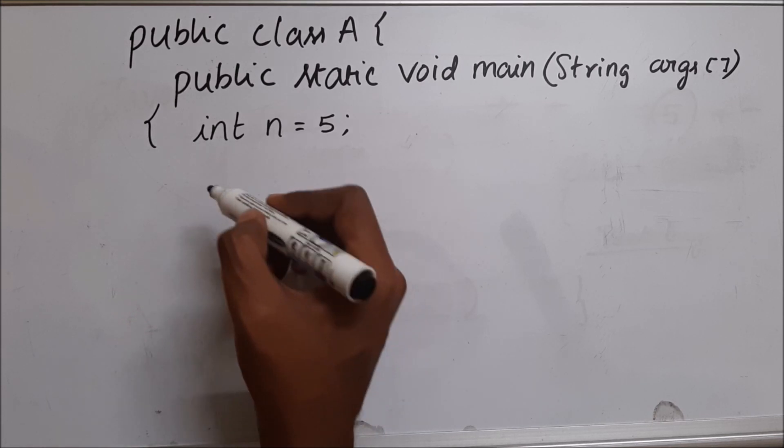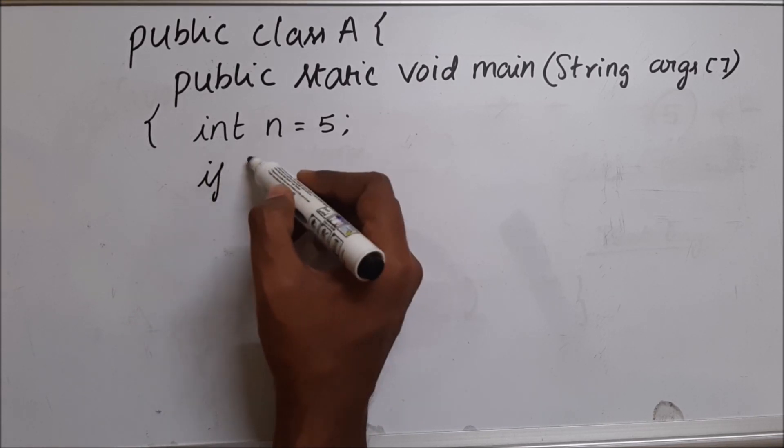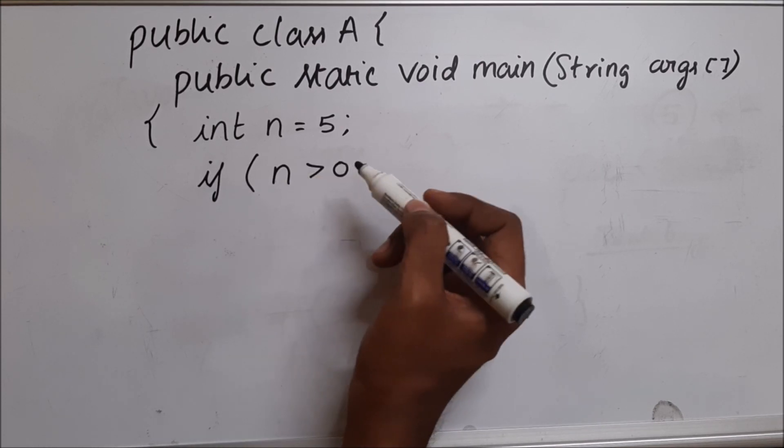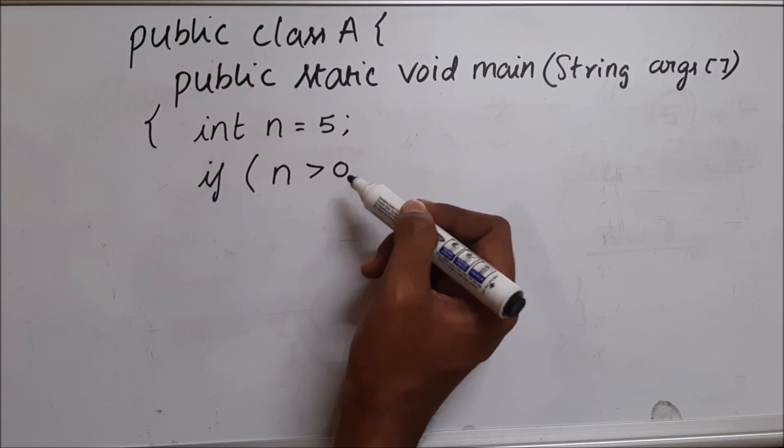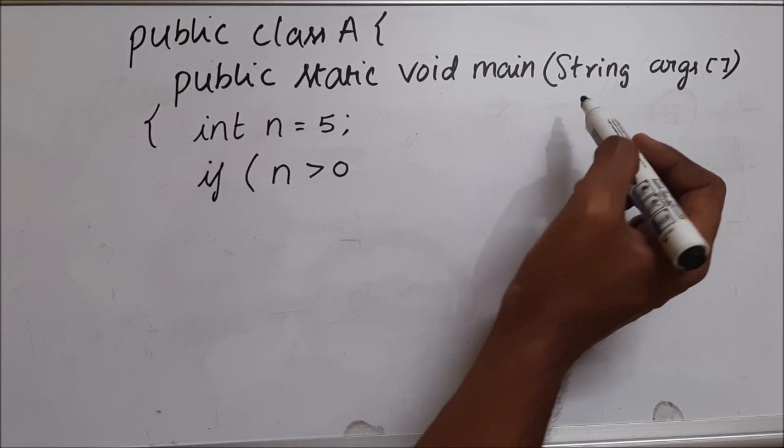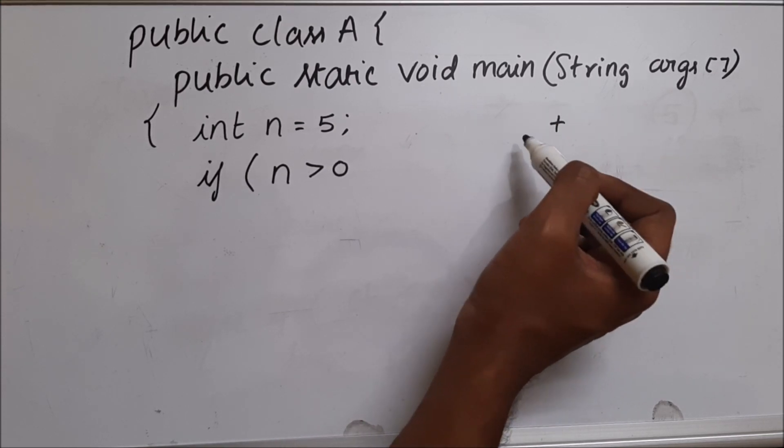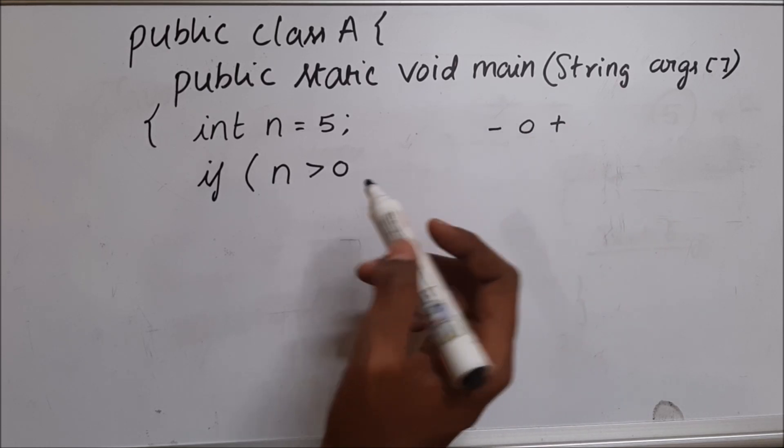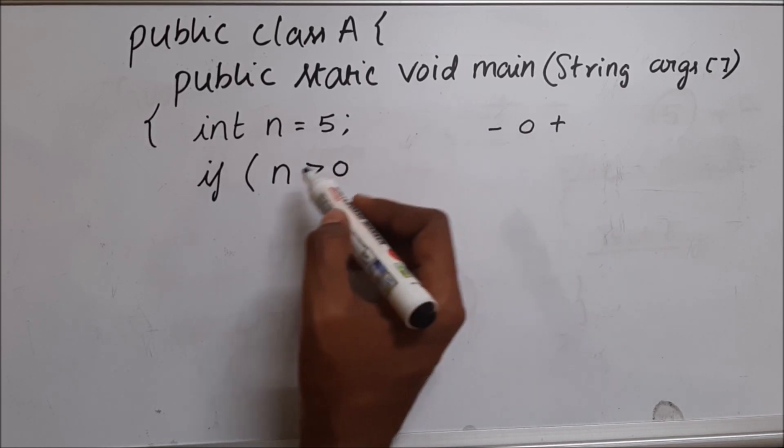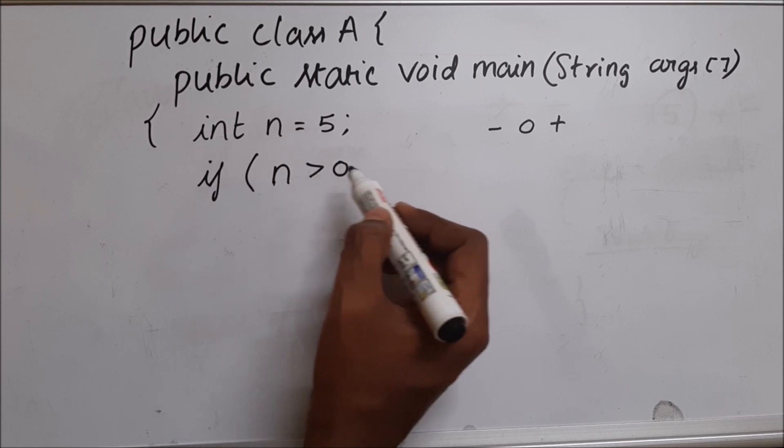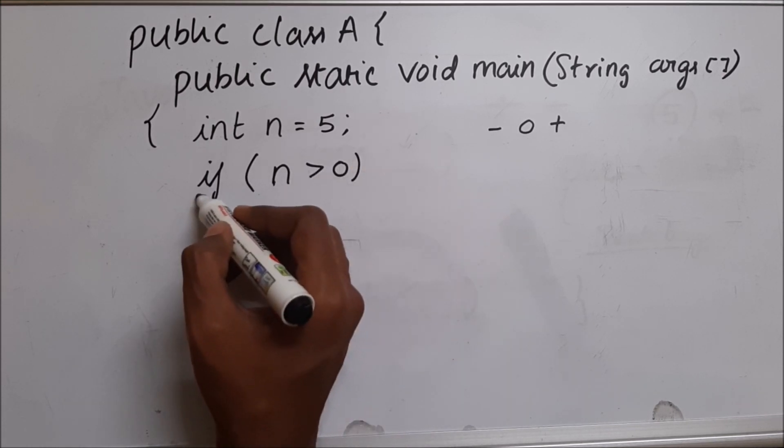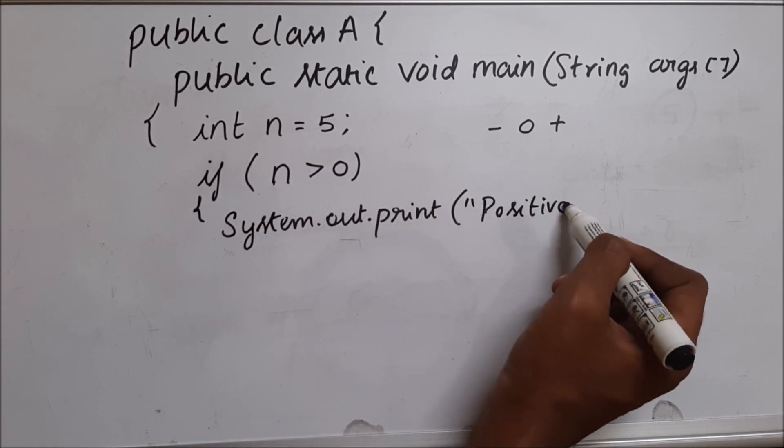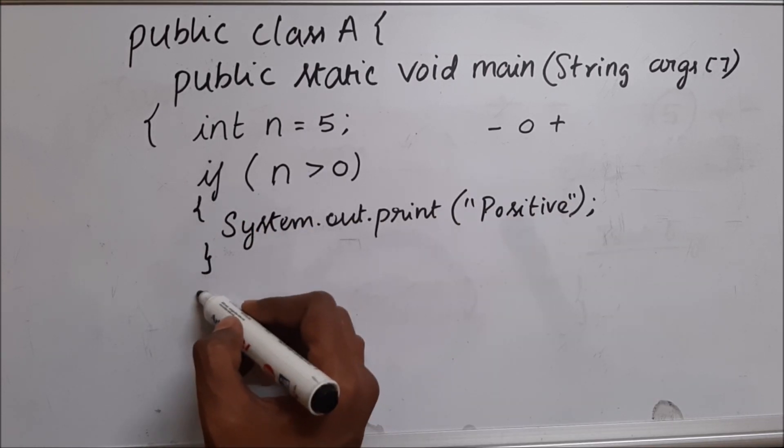Any number which is greater than zero is positive, and any number which is less than zero is called negative. I am going to use that logic. I will say if n is greater than zero, I am going to print that it is positive. Then I will close this. Then I will say else.